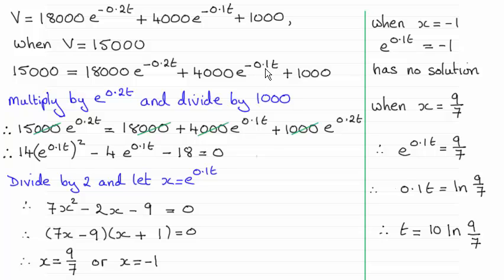So if I multiply through by e^(0.2t), then I could see that this would go to 1, this would go to e^(0.1t), just by adding the powers. So that gives us this result here. And I also divided through by 1000.